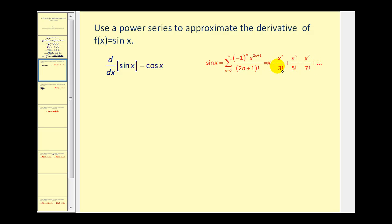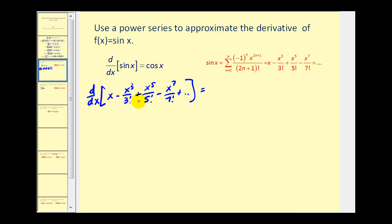Let's start by finding the derivatives of the first several terms of the power series expansion. We'll find the derivative of x minus x cubed divided by three factorial plus x to the fifth divided by five factorial minus x to the seventh divided by seven factorial and so on. These derivatives should give us the first several terms of the power series for cosine x: one minus three x squared divided by three factorial plus five x to the fourth divided by five factorial minus seven x to the sixth divided by seven factorial and so on.